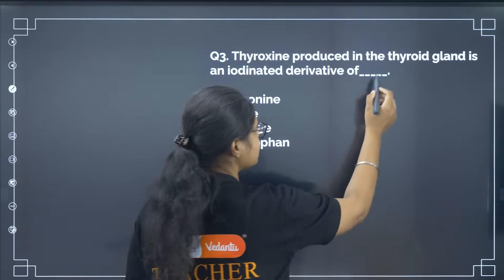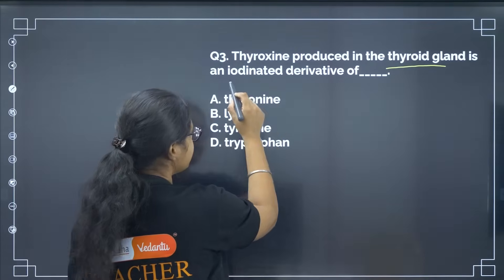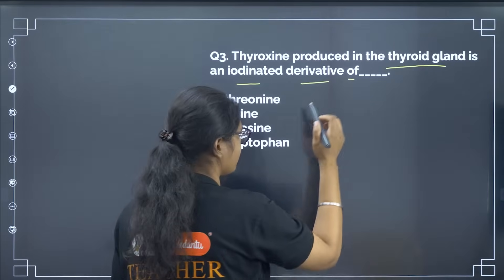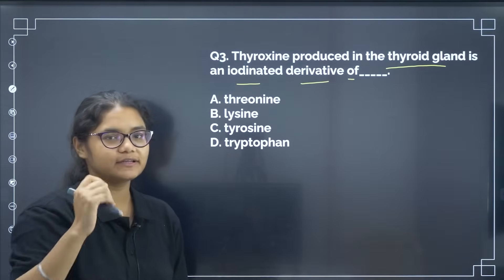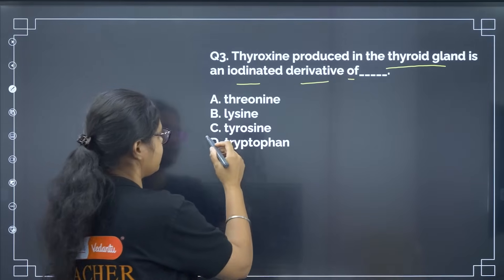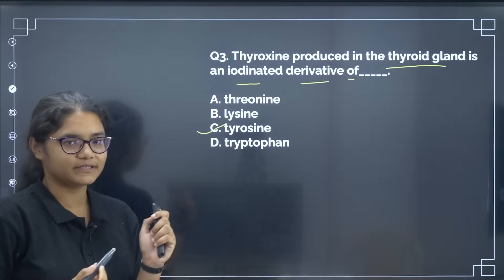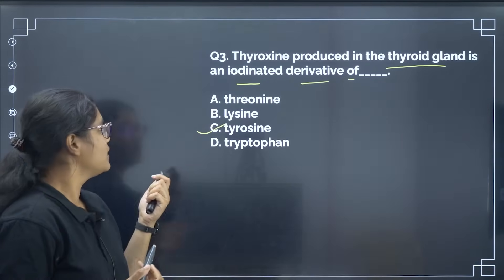Thyroxine produced in the thyroid gland is an iodinated derivative of what? This is theoretical — it is a derivative of tyrosine. So the correct answer is option number C.